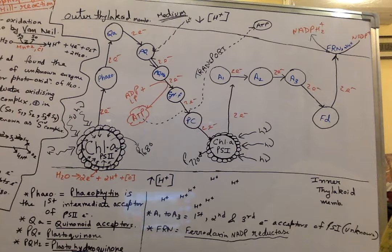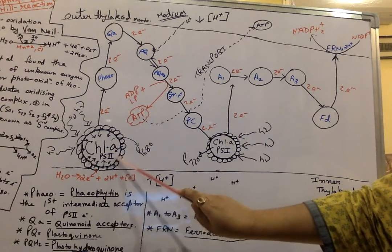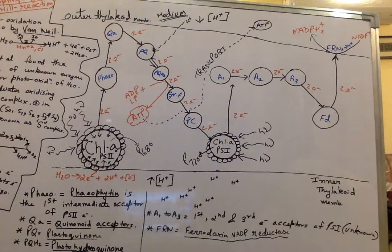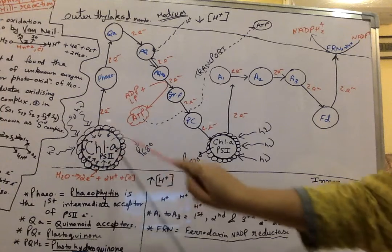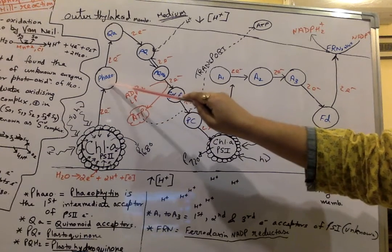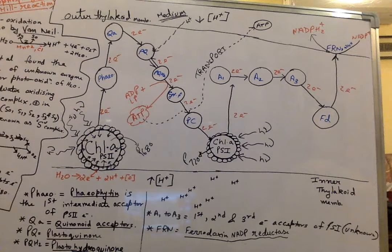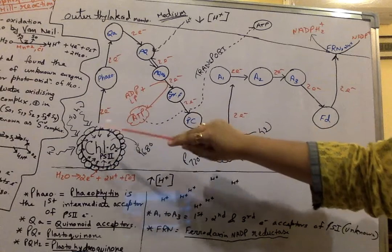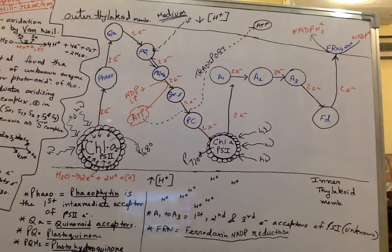For the PS2 portion: after photo-excitation of PS2 or the reaction center of PS2 — photo-excitation because photons are absorbed by the antenna molecules of PS2 — the first intermediate electron acceptor is Pheophytin, which creates a hole or void. This hole is created because electrons flow from the reaction center of PS2 to Pheophytin, creating a space in the reaction center of PS2.